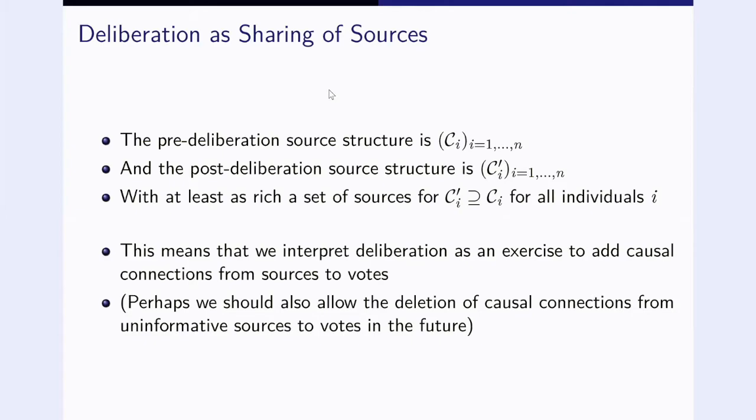As a PS, perhaps in the future, we could also consider the deletion of causal connections from uninformative sources to votes. You could imagine that deliberation helps you to weed out those sources that don't help you. That would be quite a nice feature. We don't do this right now, but it would be quite easy to add, I think.